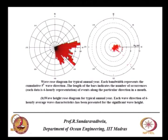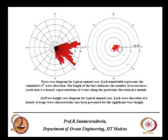For a typical annual year, each bandwidth represents a 5-degree wave direction, and the length of the bars indicates the number of occurrences. Each data point is a 6-hourly representation of events along a particular direction in a month. The most predominant direction is between 67.5 degrees to 180 degrees. The scale goes from 0 to 100 occurrences.